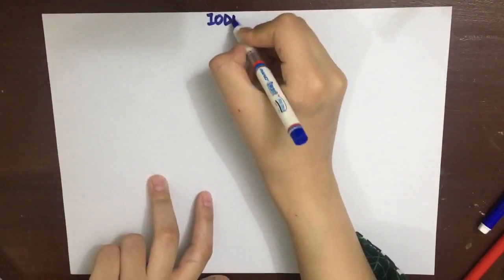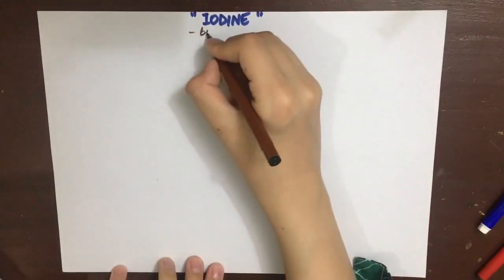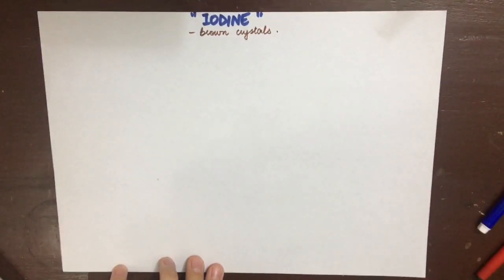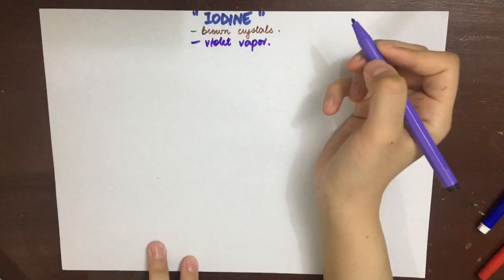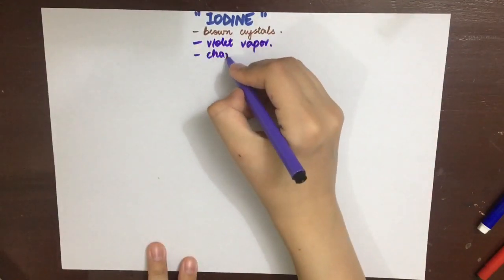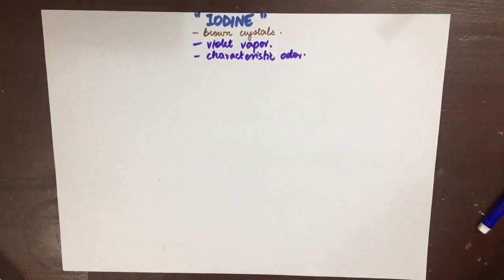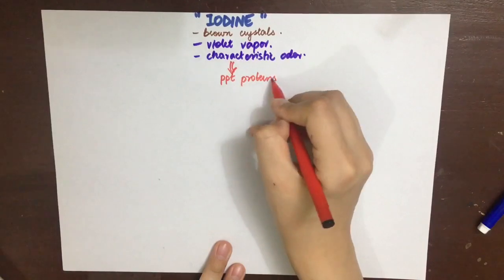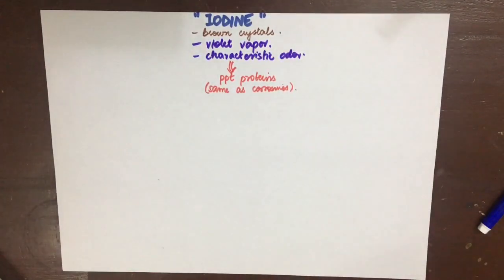The next non-metallic inorganic irritant poison we need to discuss is iodine. Iodine exists in the form of brown metallic lustrous crystals; whenever they vaporize they give violet color vapors and have a characteristic odor. The action of iodine is same as the corrosive poisons — they precipitate proteins and act as strong irritants to the GI tract and respiratory tract.